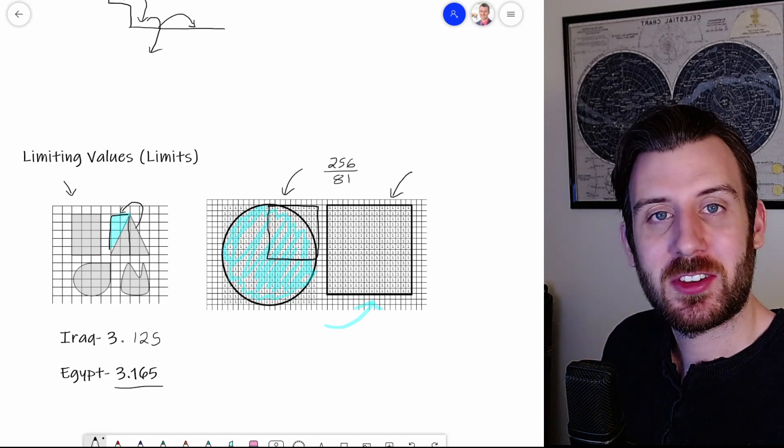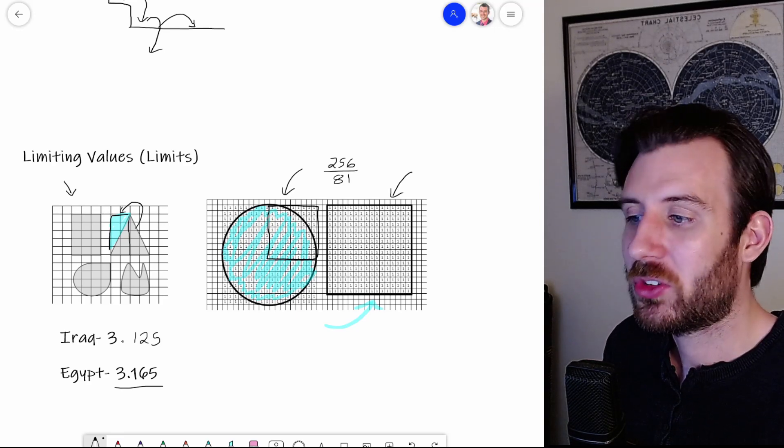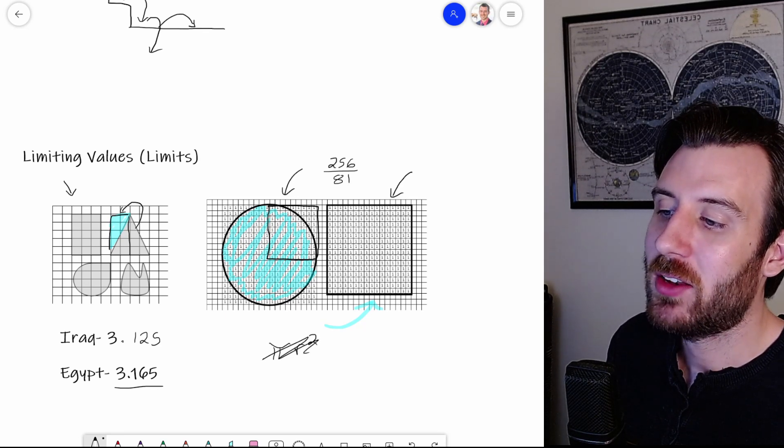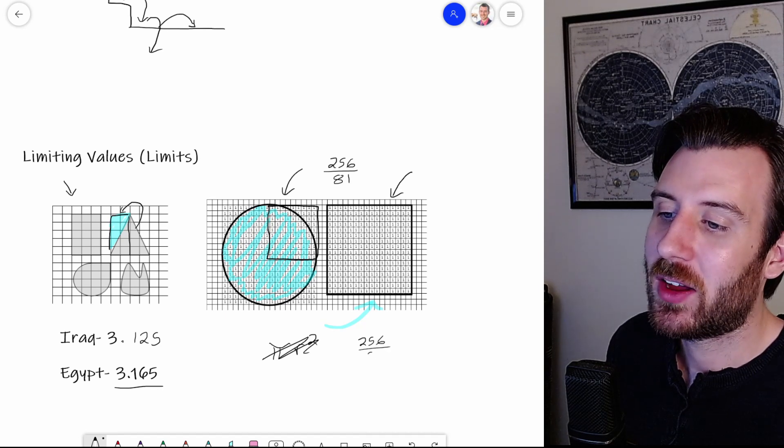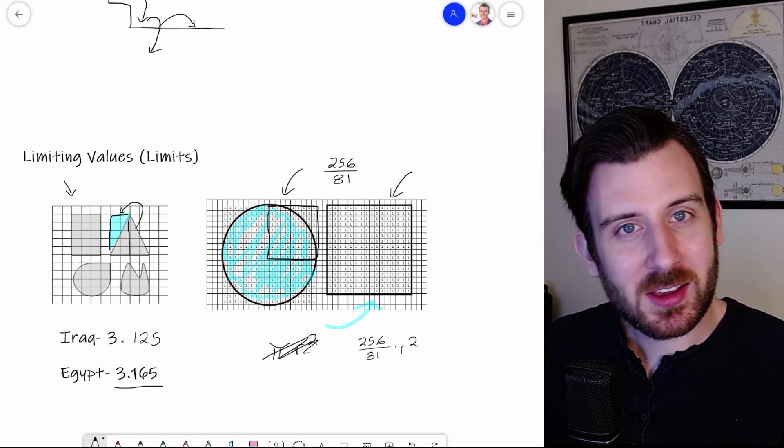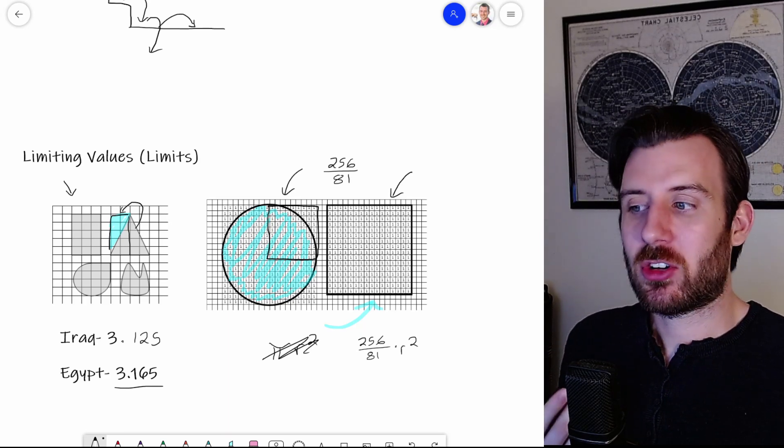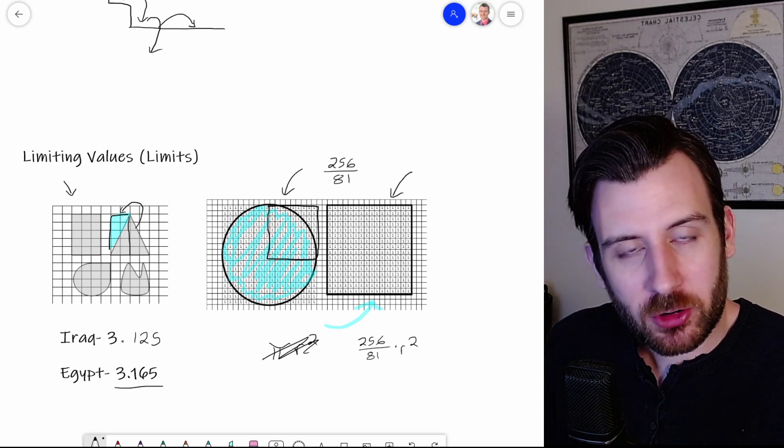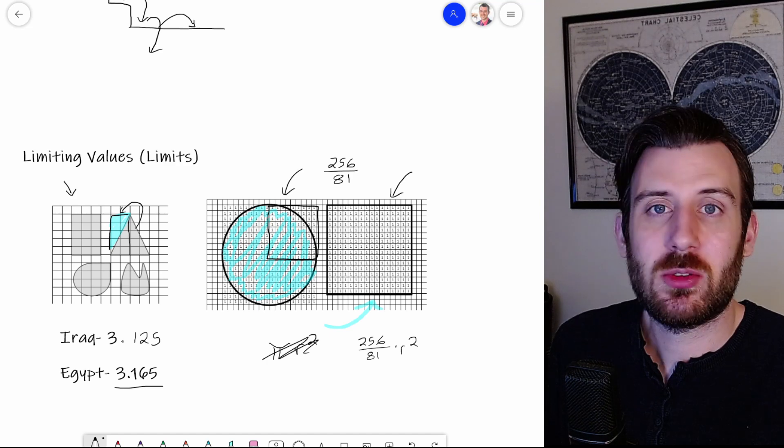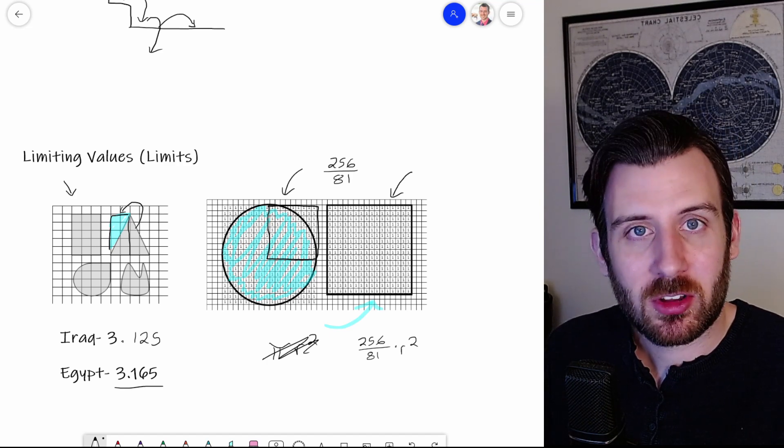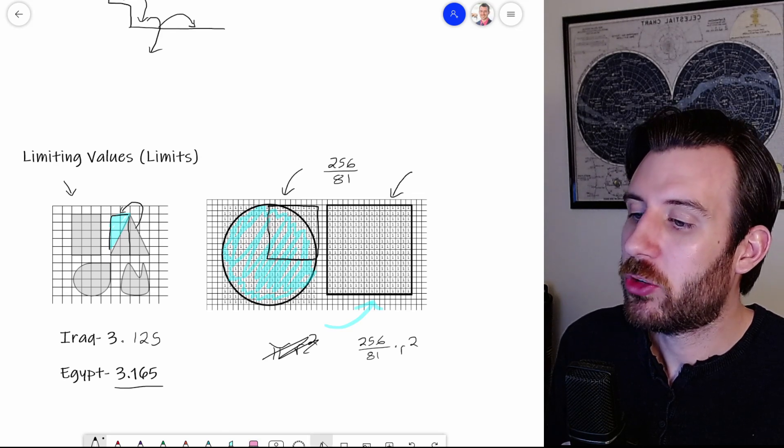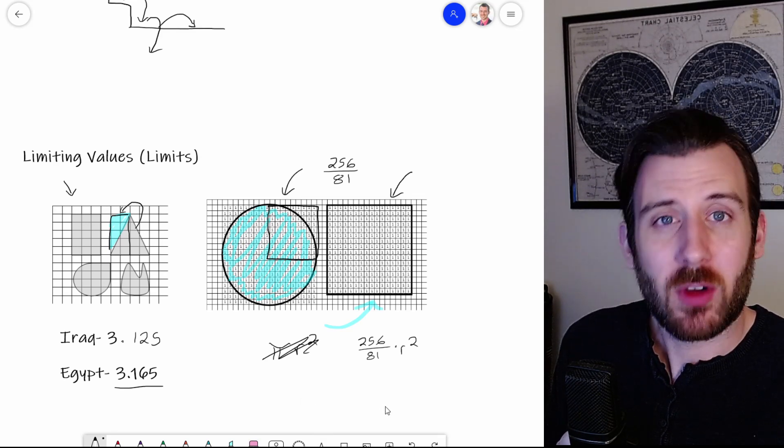So for the longest time, the area of a circle was calculated not by pi times the r square, because pi hadn't been invented, but by 256 divided by 81 times r squared. So where did pi come from? Well, as it turns out, pi is a number that we are still searching for. It's an elusive, irrational number that continues for infinitely many digits. But the first approach that got significantly closer to the value of pi was that of Archimedes.